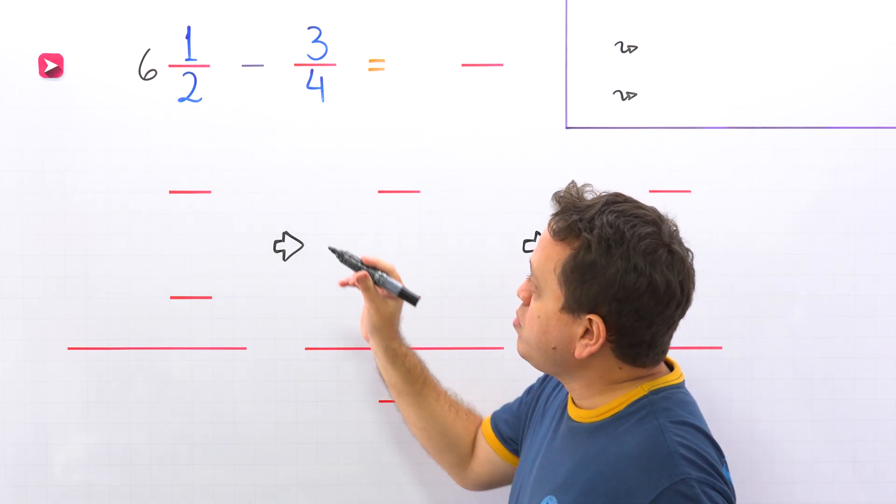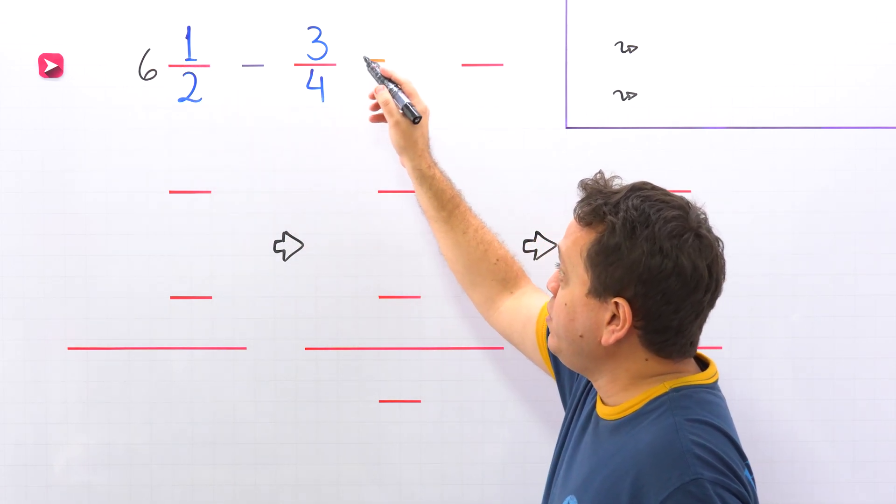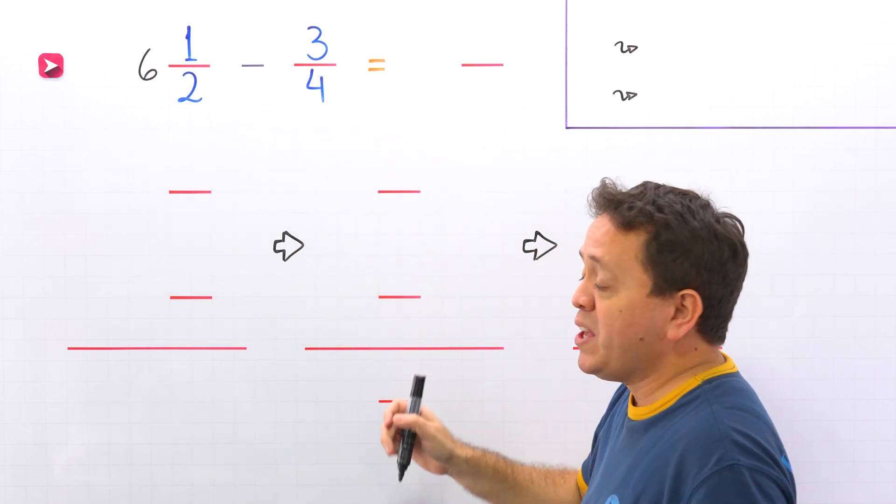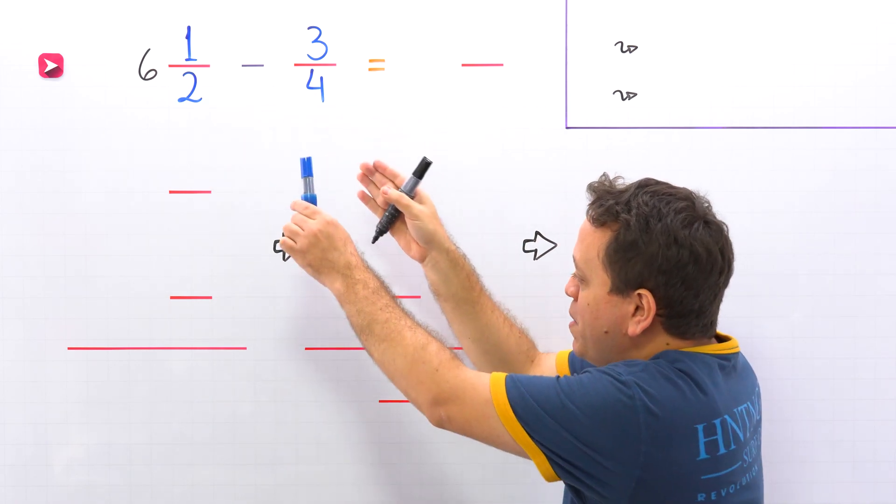In this example, we need to subtract 6 and 1/2 minus 3/4. We have a mixed number and a fraction, and this time we're going to work vertically.